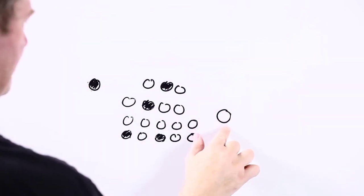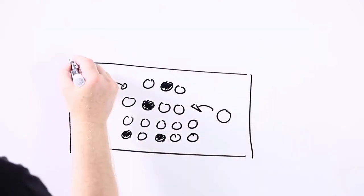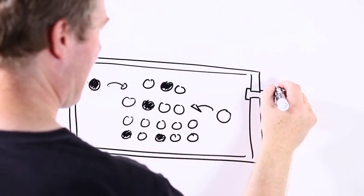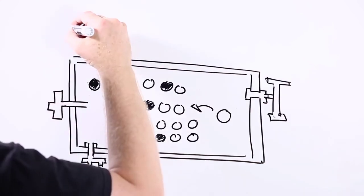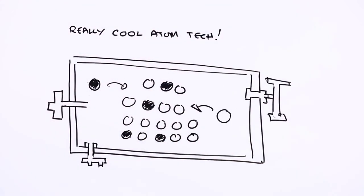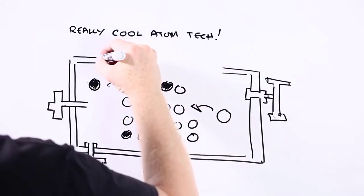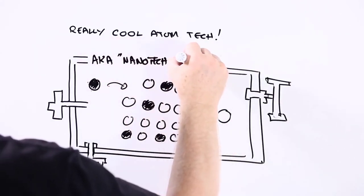But over the past few years, scientists and engineers have become increasingly good at designing and engineering materials down at the level of atoms or small groups of atoms. And because this new technology involved doing stuff at such a minute scale, it's called nanotechnology.